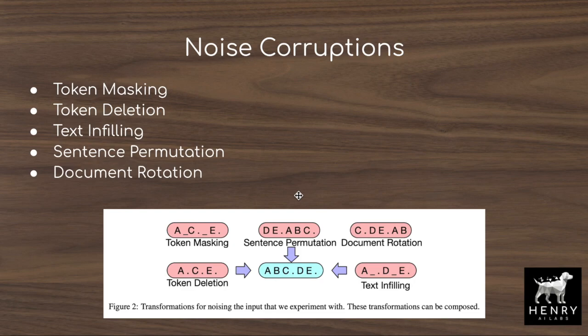Sentence permutation makes more sense for language — if you tried to randomly scramble all the pixels of an image, it would be completely impossible for the model to reconstruct the original image. Document rotation is where you rotate the document such that the start comes at the end, and then the model tries to reconstruct where the start of the document is. This can be really useful for summarization tasks to help the model understand the structure of start and end of a scientific research paper.